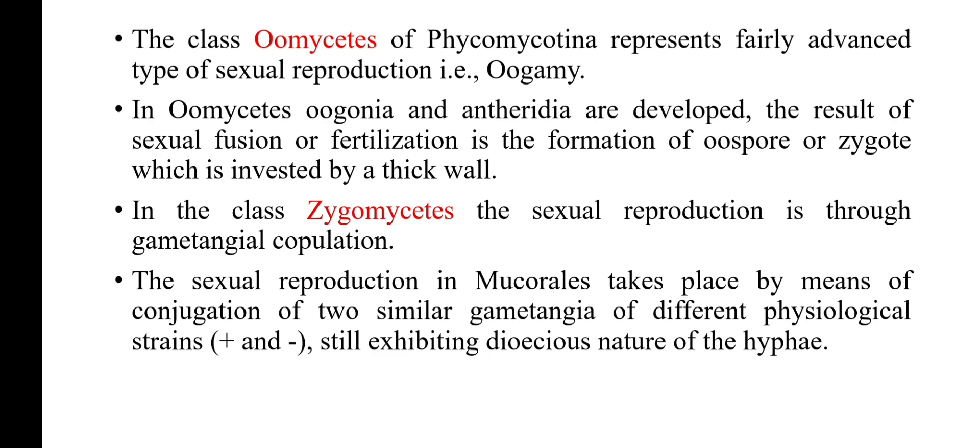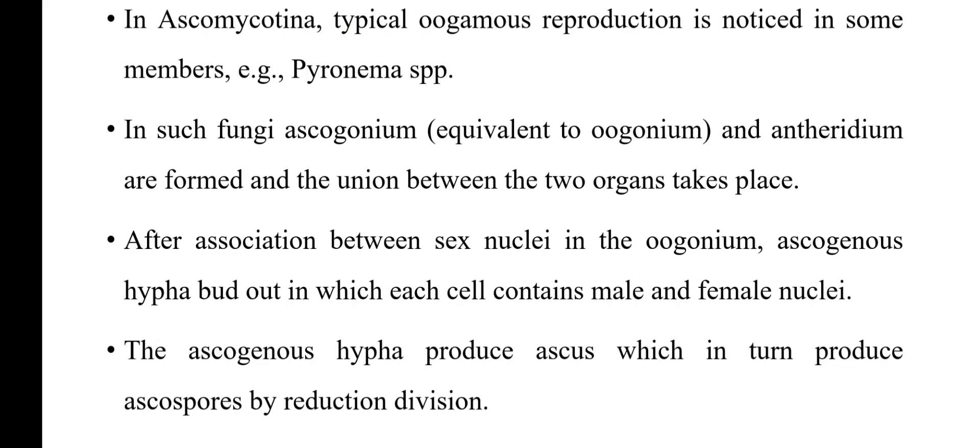The sexual reproduction in Mucorales — Mucorales comes under Phycomycetes — takes place by means of conjugation of two similar gametangia: two similar gametangia of different physiological strains, that is plus strain and minus strain, still exhibiting the dioecious nature of hyphae.